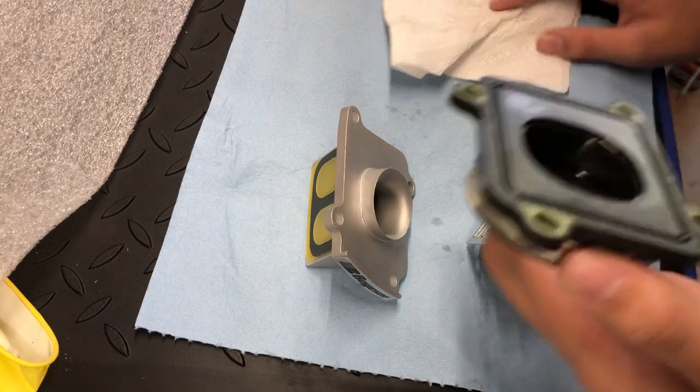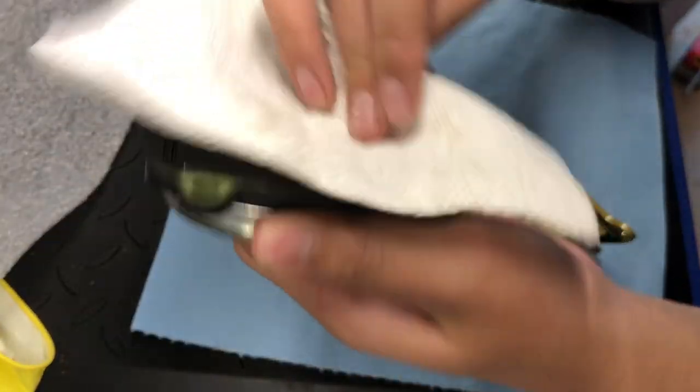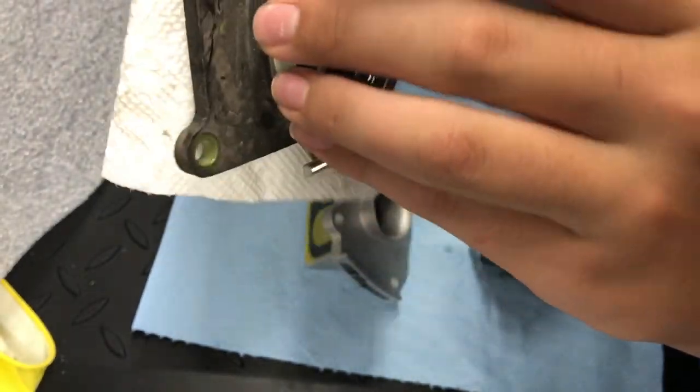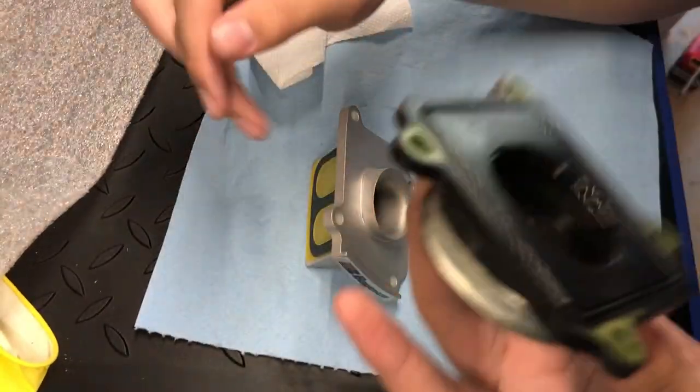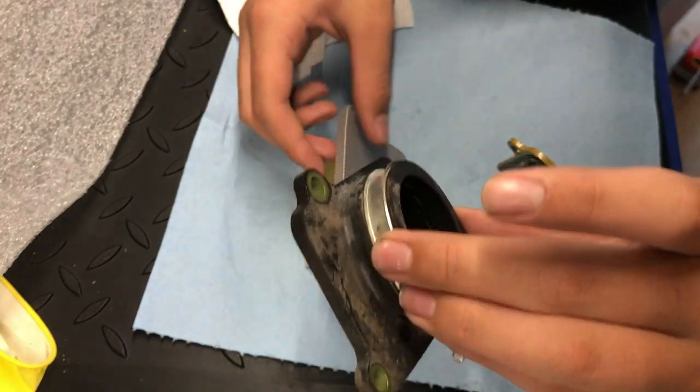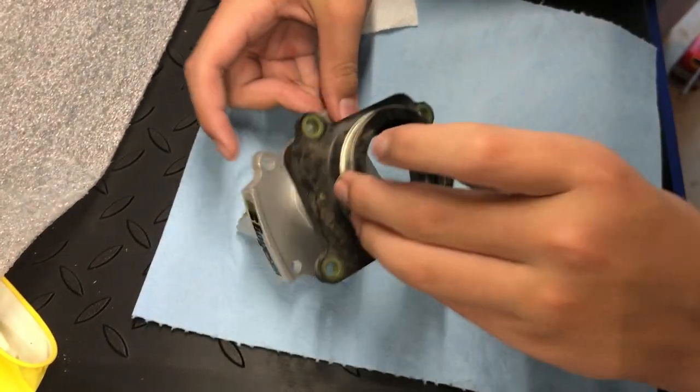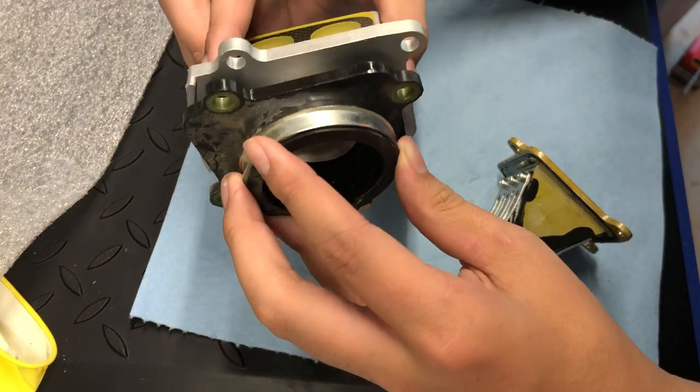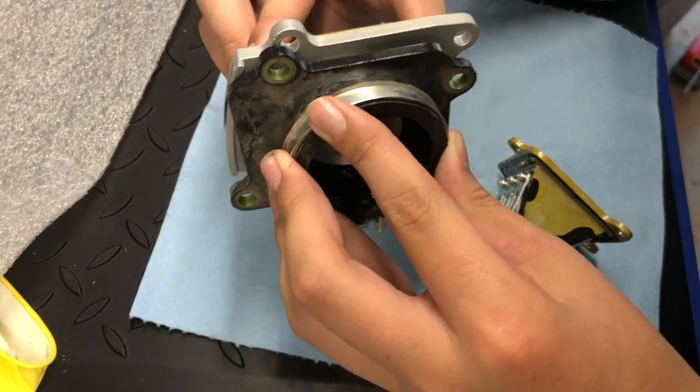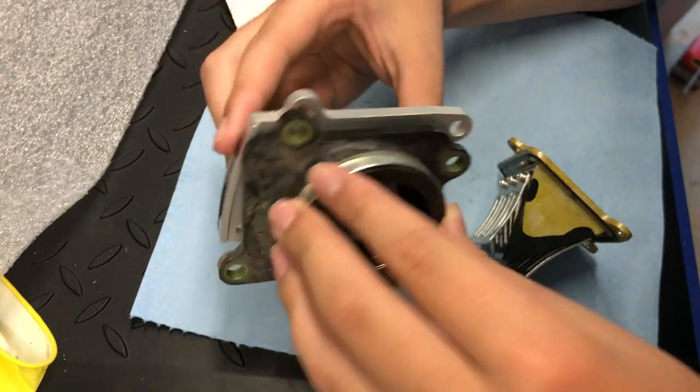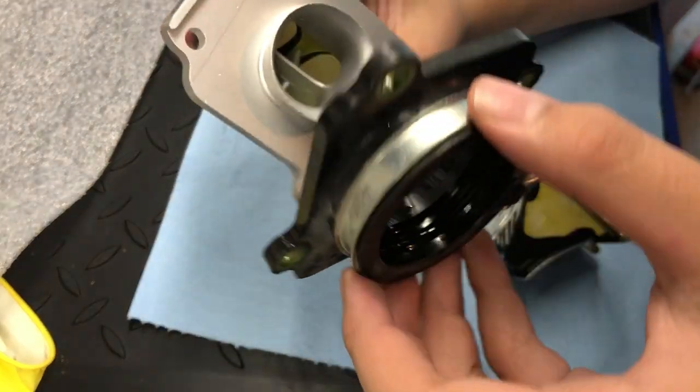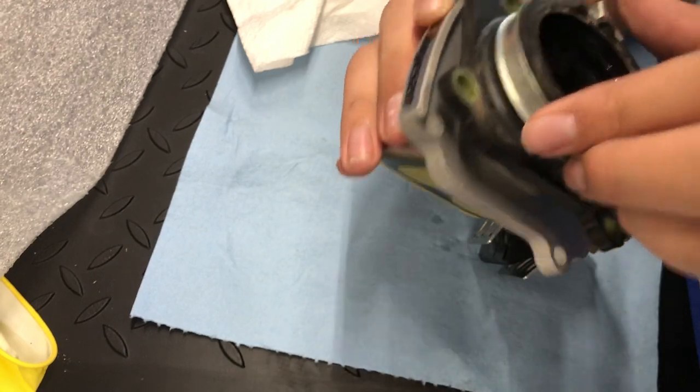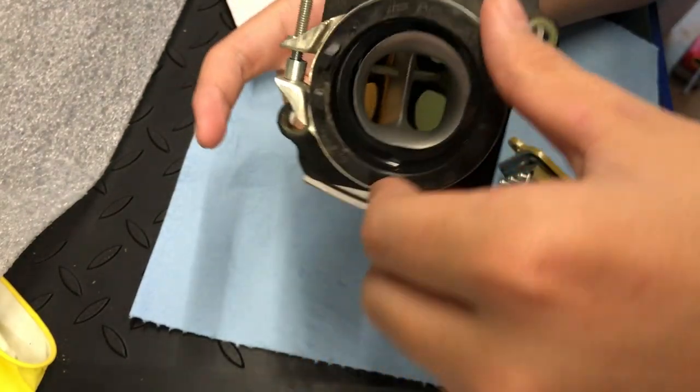So here is the piece that connects to the airbox or the carburetor. Sorry. This is the piece that will connect to the carburetor. I believe. Yep. And as you can see it's nice and open, not restrictive at all. And it just fits right over like that, just like that. Obviously there will be a gasket on the other side.